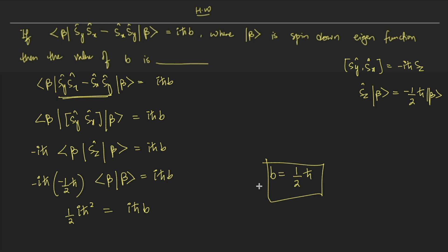Solving this: the two minus signs give a plus, yielding ½·i·ℏ² = i·ℏ·b. Cancelling common factors, b = ½·ℏ. Many of you answered this correctly and I'm happy about that. A common mistake was writing a minus sign, either by overlooking that the commutator is Sy·Sx, not Sx·Sy — so the value is minus i·ℏ·Sz, not plus.